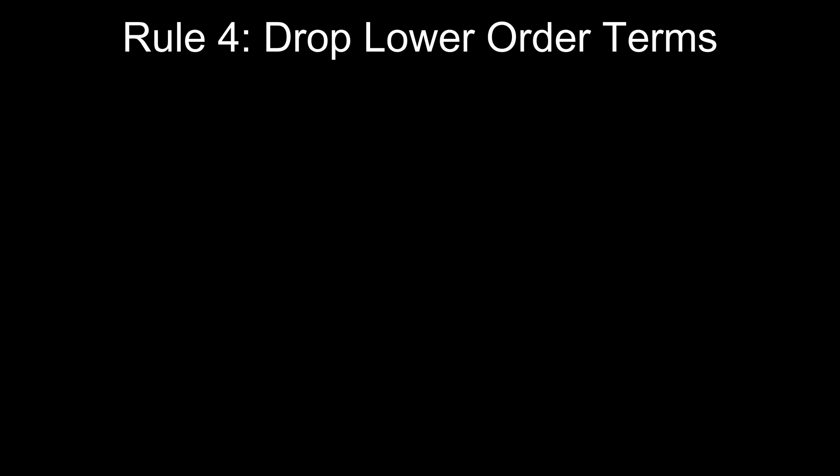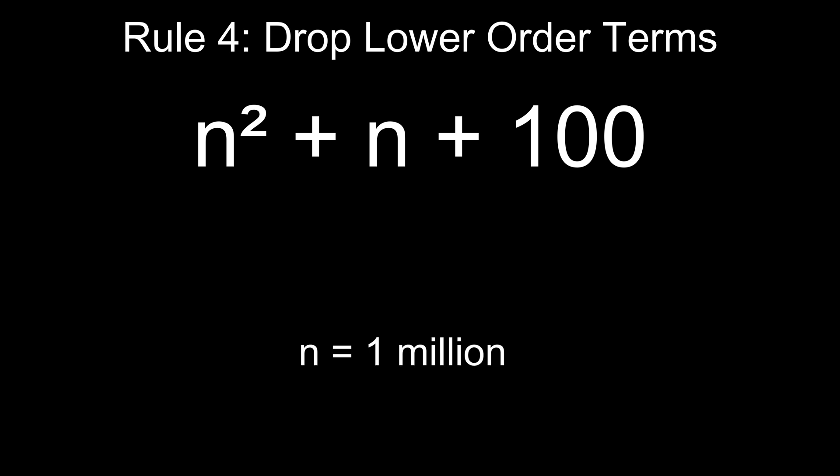Rule 4: Drop lower order terms. If your final expression has multiple terms, you keep only the one that grows the fastest and drop the rest. Why? Because as N becomes very large, slower growing terms become insignificant. Let's use this example. Imagine N is 1 million. N squared which is the dominant term becomes 1 trillion, while N is just 1 million and the constant term stays at 100. At scale, the lower order terms barely make a dent in the overall growth, so we only keep the term that dominates.